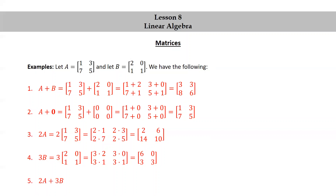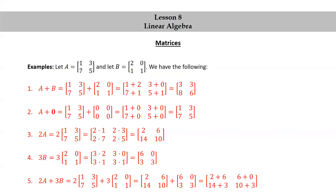2A + 3B equals 2×[1, 3; 7, 5] + 3×[2, 0; 1, 1]. From the previous examples, this equals [2, 6; 14, 10] + [6, 0; 3, 3]. Adding entry by entry: [2+6, 6+0; 14+3, 10+3] = [8, 6; 17, 13].